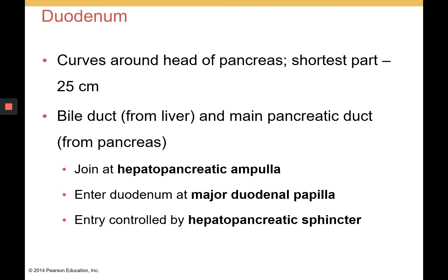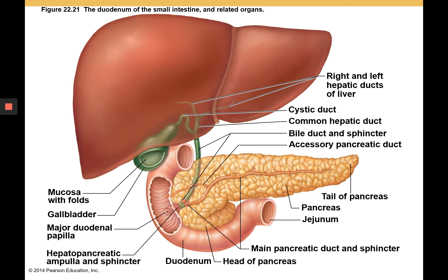The duodenum is the curved, shortest part of the small intestine. It curves around the head of the pancreas and is about 25 centimeters in length. It accepts both the bile duct and the main pancreatic duct at the hepatopancreatic ampulla, and they enter the duodenum at the major duodenal papilla. That entry is controlled by a sphincter called the hepatopancreatic sphincter. Here is the pancreas in yellow with the main pancreatic duct and common bile duct meeting at the hepatopancreatic ampulla and sphincter, and the major duodenal papilla where secretions from the liver and pancreas empty into the small intestine.